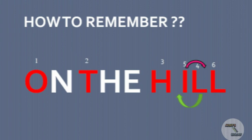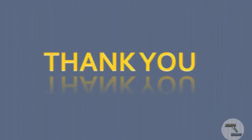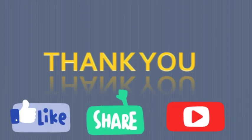Now let's look at how to write the Enzyme Commission number. The EC number of an enzyme is written as: the class of the enzyme, dot, the subclass, dot, the sub-subclass, dot, the serial number. In the next video I will discuss about the six classifications of enzymes in a descriptive way. That's all for today, thank you. Please like and share the video, and please subscribe to my channel and hit the bell icon.